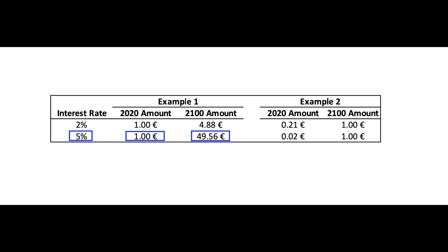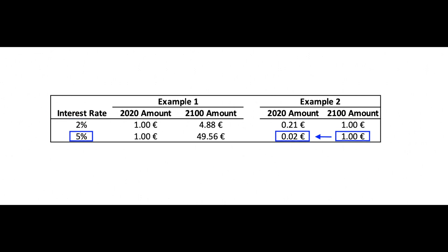Similarly, if you want to know the current value of a future amount, you have to discount it back to the present. So if you cause a damage of 1 euro in 2100, that is worth about 21 cents today at a discount rate of 2%. But at a discount rate of 5%, it is worth 2 cents today.